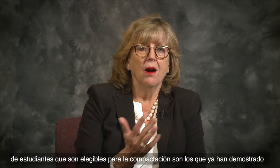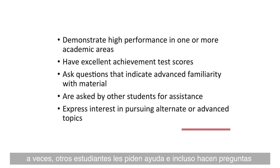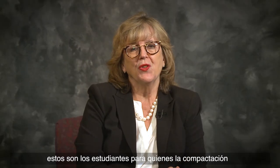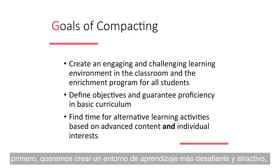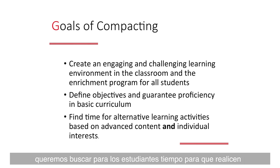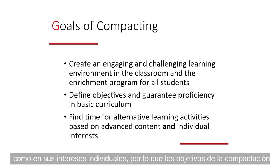Students eligible for compacting already demonstrate high performance — they have high achievement scores, high aptitude scores, ask questions showing they're advanced, help other students, and ask to go further. There are three major goals of compacting: first, create a more challenging and engaging learning environment; second, clearly define the objectives of the regular curriculum and guarantee proficiency; and third, find students time for alternative learning activities based on advanced content and their individual interests.